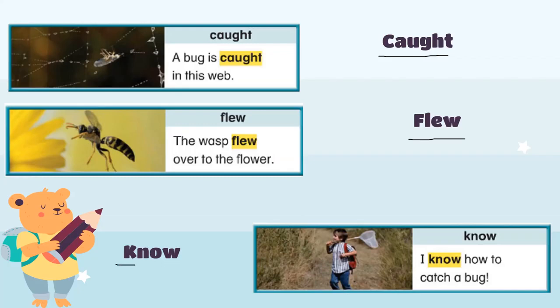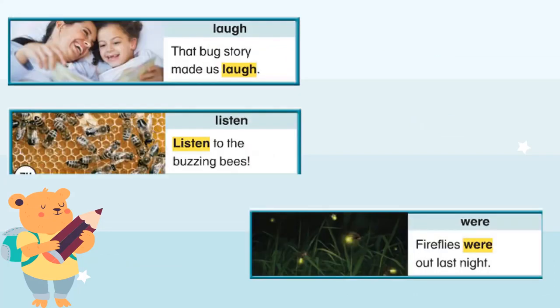Miss K is visiting the word 'know,' so we have to write the K but we do not pronounce it. 'Know' — say it again: 'know.' Perfect! Like: I know how to write the word 'know.' It has a silent K at the beginning.